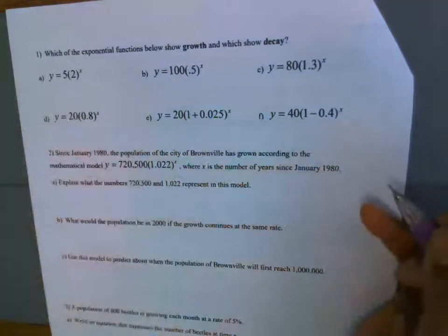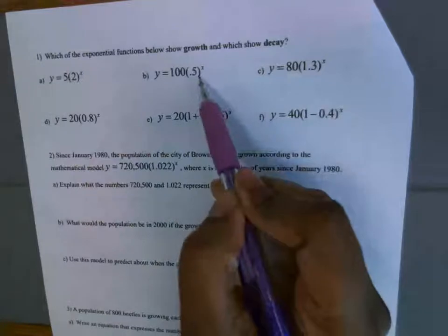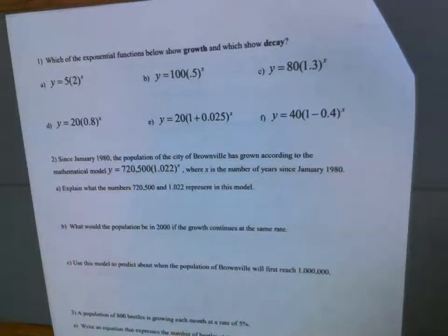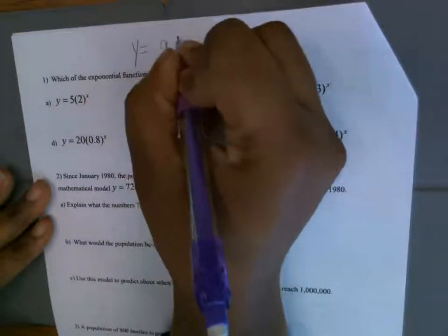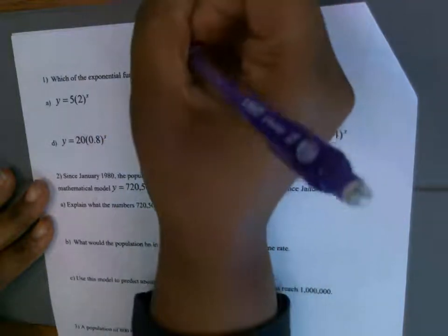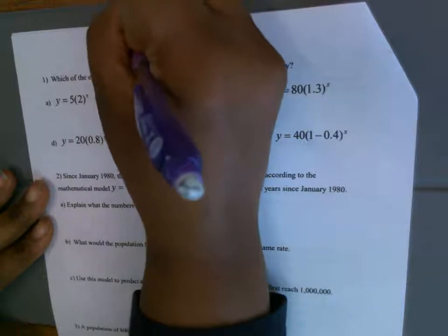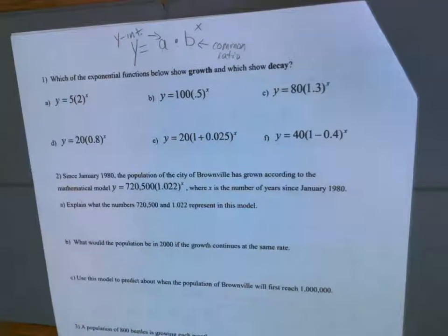We're going to do A through F. It says which of the exponential functions — all of these are exponential functions because X is raised to an exponent. We're going to state whether this is growth or decay. We're also going to write the standard form for exponential functions, which is A times B to the X power, where A is your Y-intercept or starting amount, and B is your common ratio. We'll identify A and B in each and state if it's growth or decay.